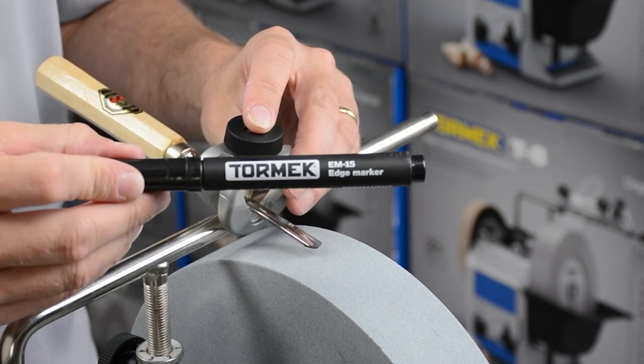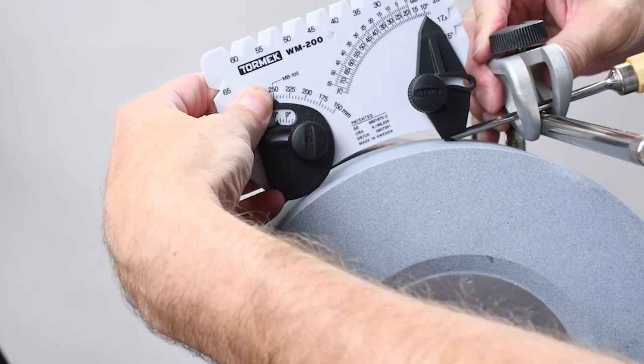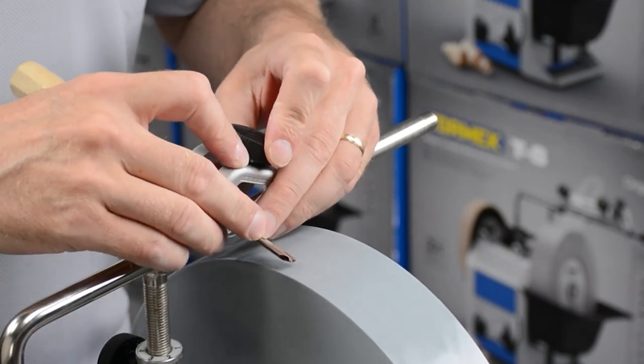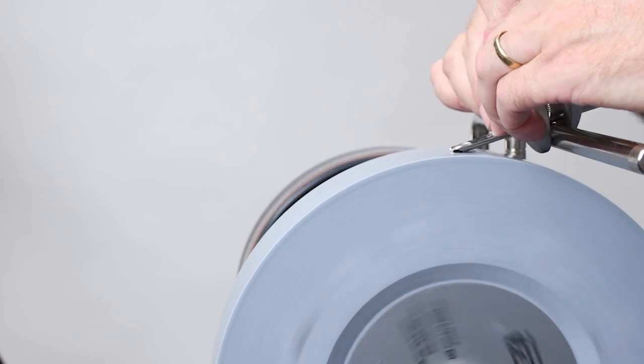Use the marker method or the WM200 Angle Master to set the desired angle. Move the tool across the wheel while rotating the jig to sharpen the edge evenly.